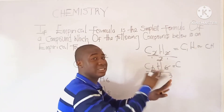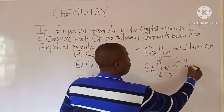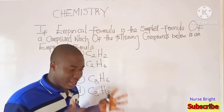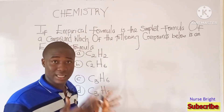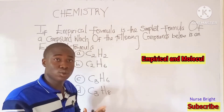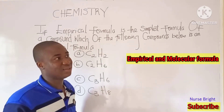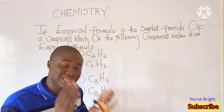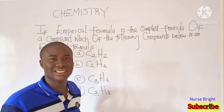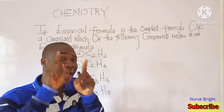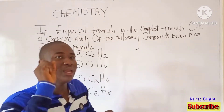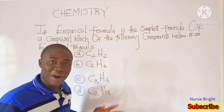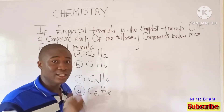Welcome to Chemistry Made Easy with Bright Edo. In today's class, I'll be teaching an important aspect in chemistry: solving questions on empirical and molecular formula. The empirical formula is simply the simplest form a compound can exist. It tells us the actual elements present in a compound and gives us the simplest whole number ratio of a particular compound.